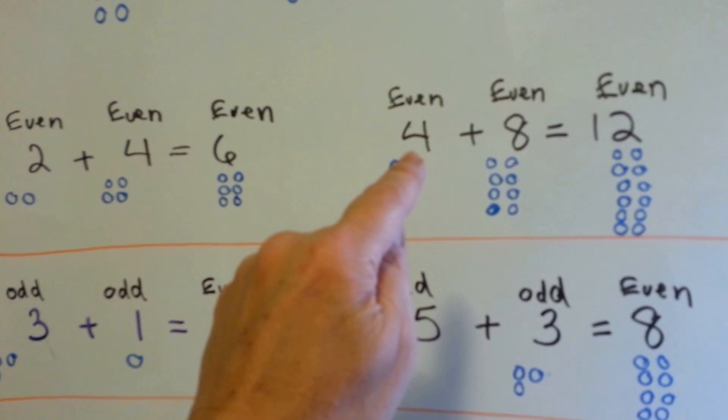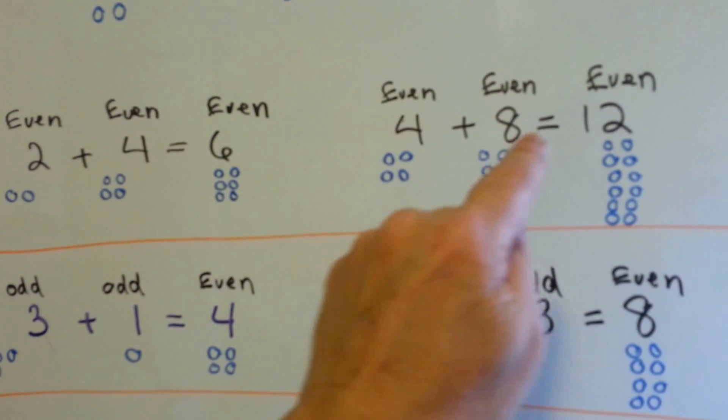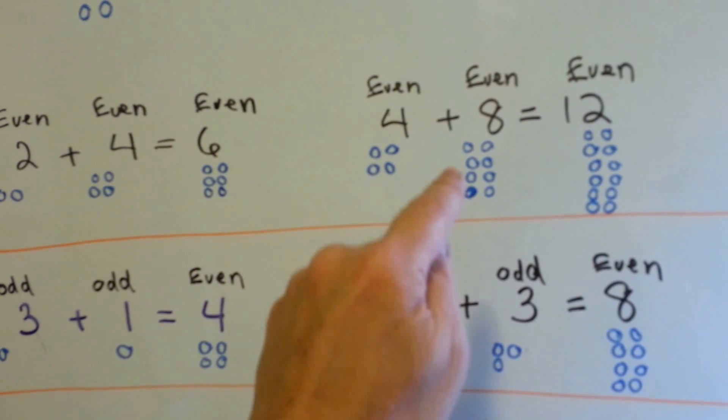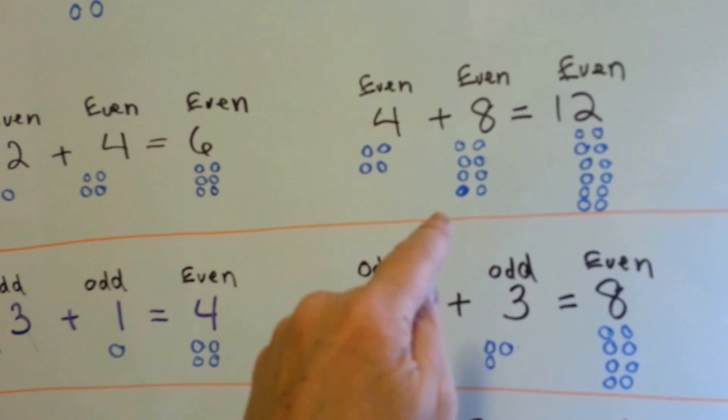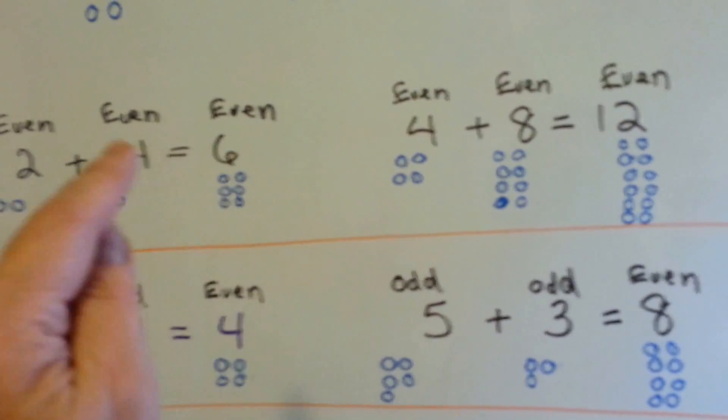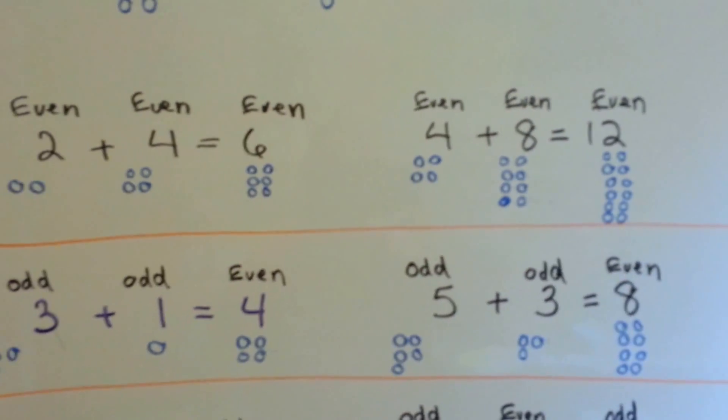An even number 4 plus an even number 8 equals an even number 12. That's 4. See how they each have a friend? That's 8. They each have a friend and 12. They each have a friend. So an even number plus an even number is going to give you an even number.